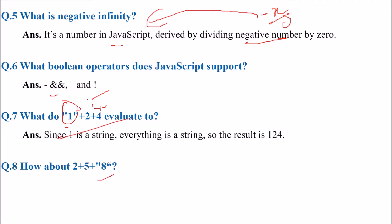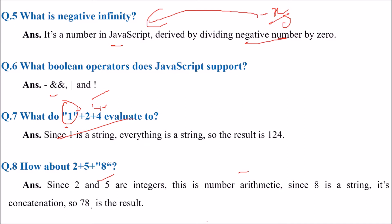How about 2 plus 5 and then double quotes 8? 2 and 5 are integers, so this is number arithmetic. Since 8 is a string, it will be concatenation. 2 and 5 will give 7 and then it will be concatenated by the plus sign with 8, so this will be 78.